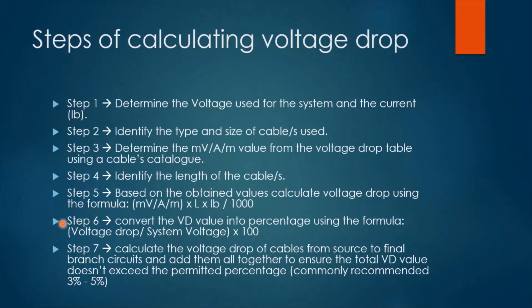Step six: convert the voltage drop value into a percentage using the percentage formula. Step seven: calculate the voltage drop of cables from source to final branch circuit and add them all together to ensure the total voltage drop value does not exceed the permitted percentage, which is recommended between 3% and a maximum of 5%.